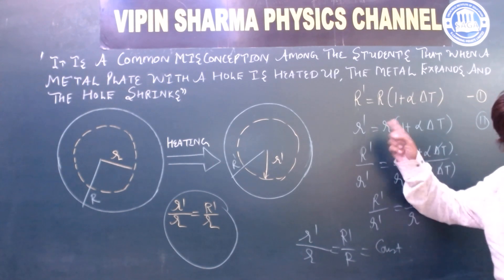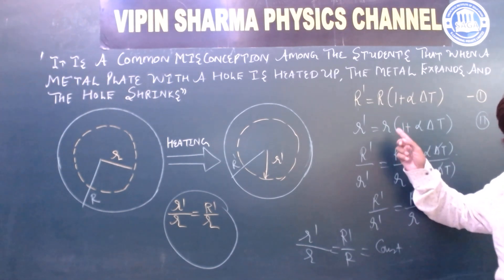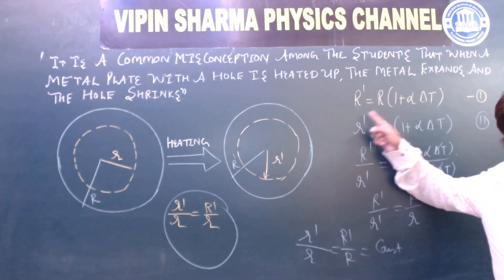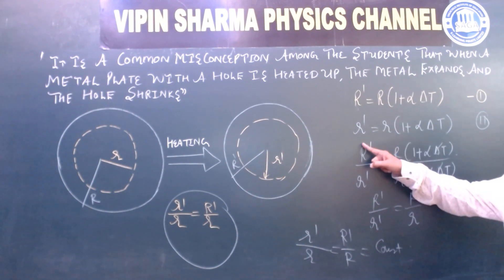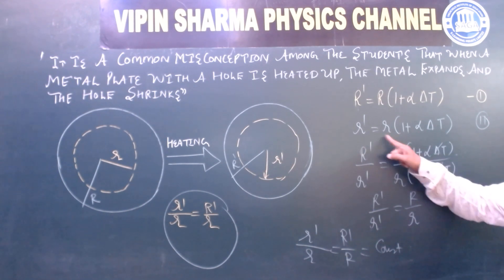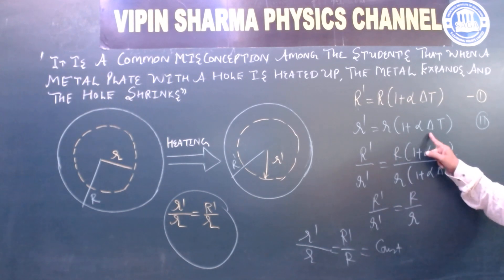That is, R' equals R(1 + α∆T). Small r' is the radius of the inner hole. r' after heating equals r(1 + α∆T).